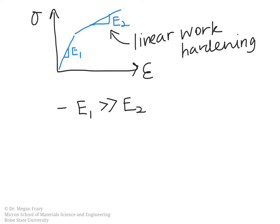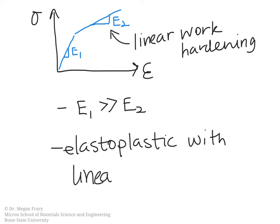E1 is truly the Young's modulus here because it's in the elastic region. E2 is really a slope. It's not necessarily an elastic modulus because plastic deformation is occurring there. So this model is what we would call elasto-plastic with linear work hardening, because we're assuming work hardening happens, but that it happens in a linear fashion.